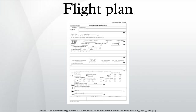SIDs and STARs are procedures and checkpoints used to enter and leave the airway system by aircraft operating on IFR flight plans. There is a defined transition point at which an airway and a SID or STAR intersect. A SID, or standard instrument departure, defines a pathway out of an airport and onto the airway structure. A SID is sometimes called a departure procedure. SIDs are unique to the associated airport.